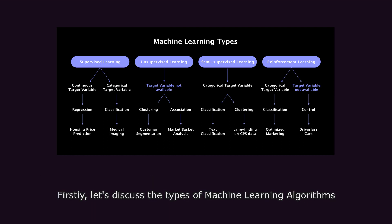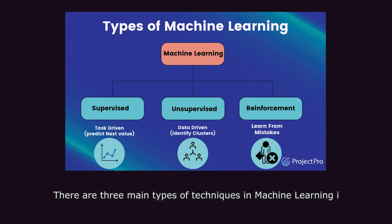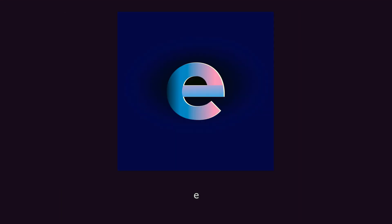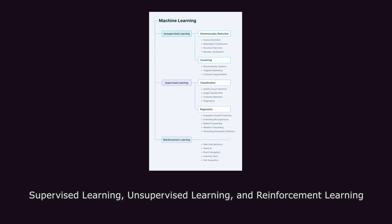First, let's discuss the types of machine learning algorithms. There are three main types of techniques in machine learning: supervised learning, unsupervised learning, and reinforcement learning.